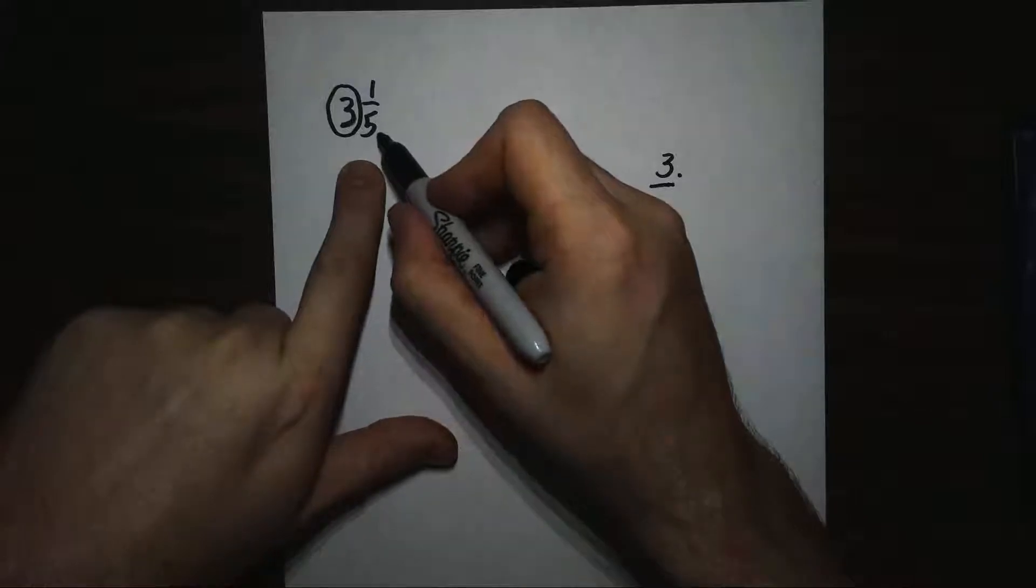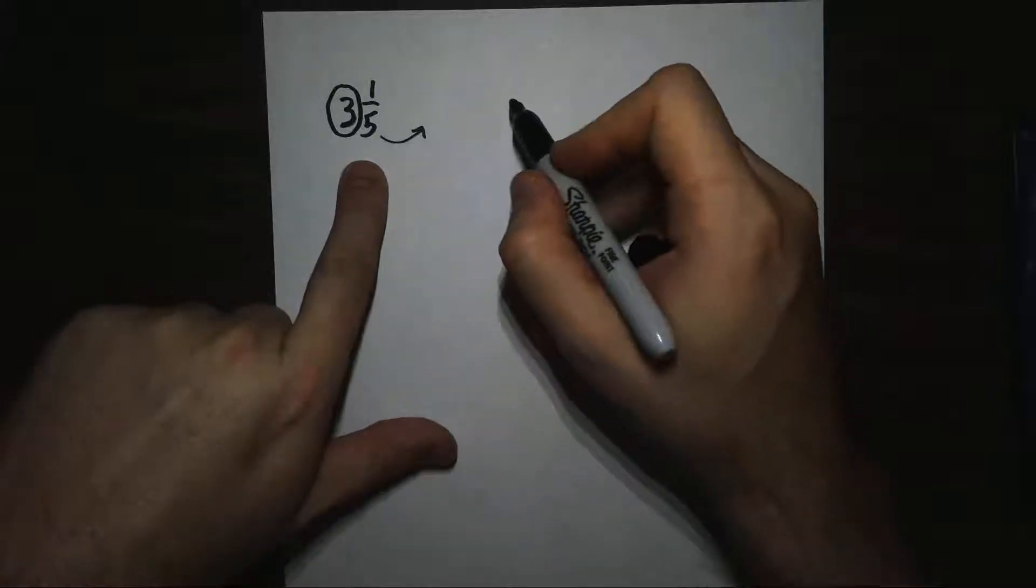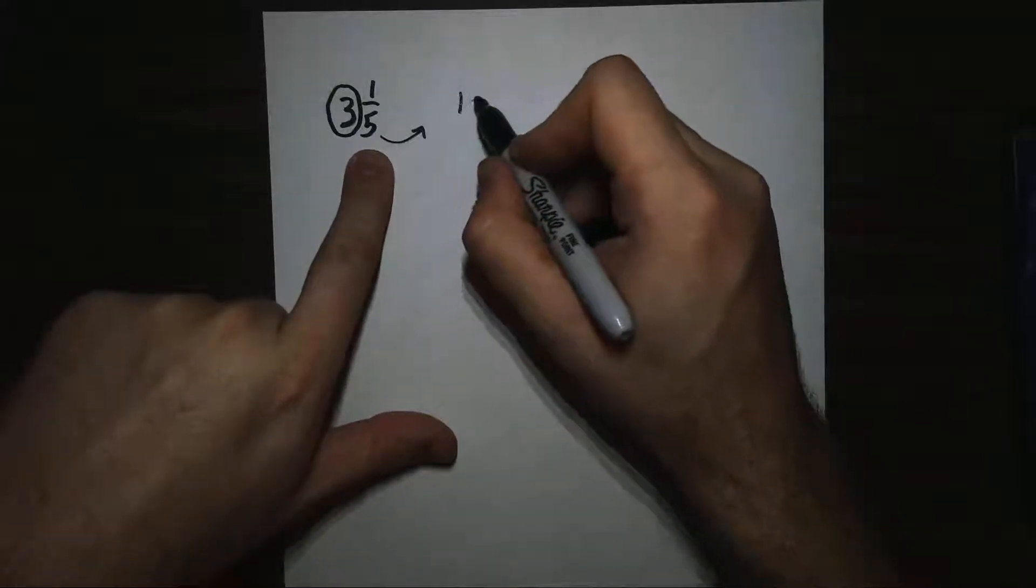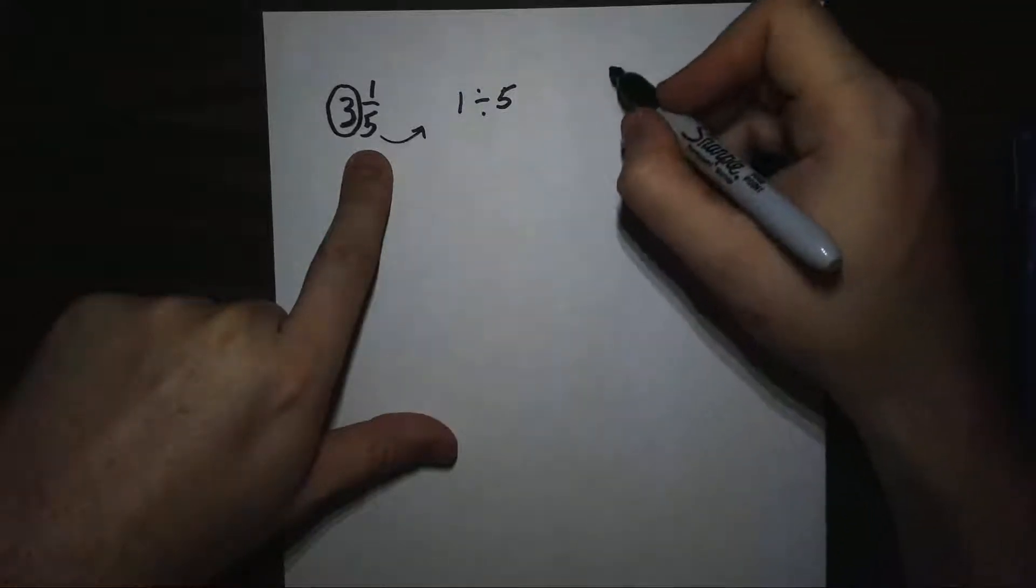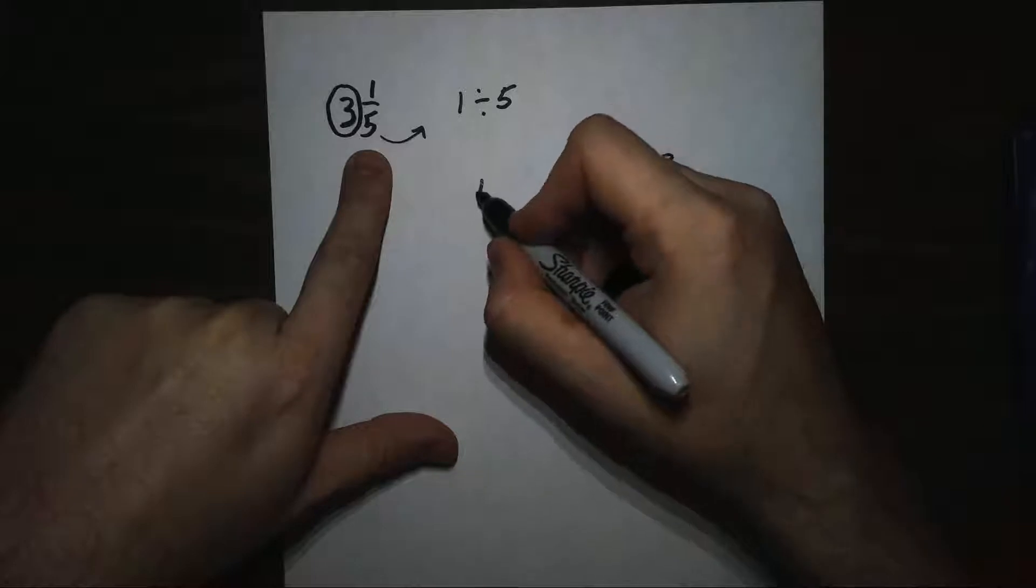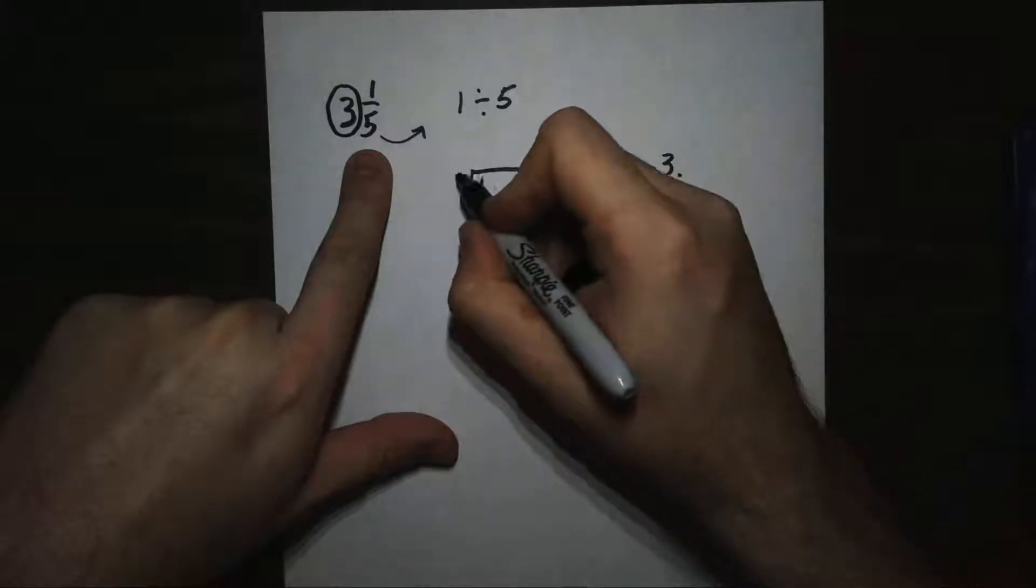So we're going to take our fraction part and we're going to change it into a division problem. 1/5 means 1 divided by 5. So we're going to write that out with long division, which would be 1 divided by 5.